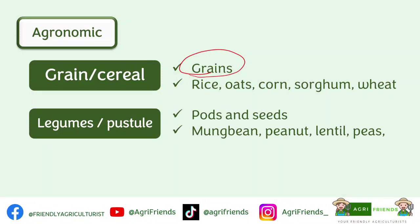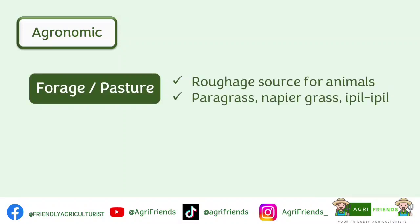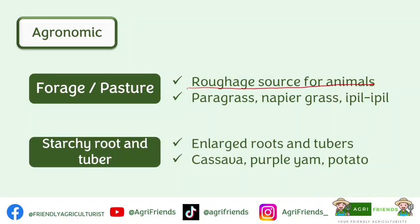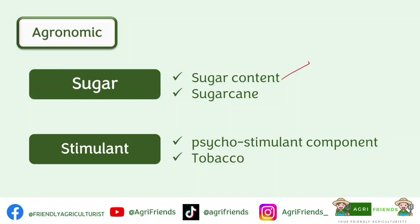Legumes are grown for their pods and seeds — examples include mung bean, peanut, lentils, and peas. Fiber crops are grown for their fiber used in textile and twines — examples are cotton, abaca, jute, rami, and kenaf. Forage or pasture crops are grown as roughage for animals, such as paragrass, napier grass, and ipil-ipil. Starchy root and tuber crops are grown for their enlarged roots and tubers — cassava, purple yam, and potato. Sugar crops are grown for their sugar content, such as sugarcane and sugar beet. Stimulant crops are grown for their psychostimulant components — an example is tobacco because it contains nicotine.